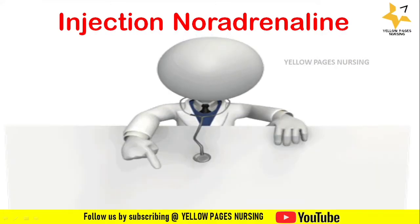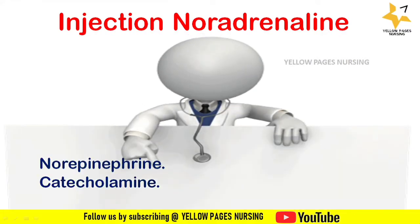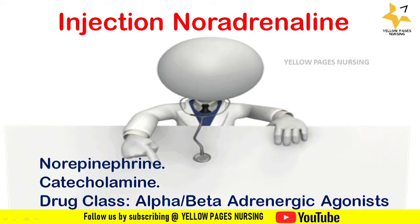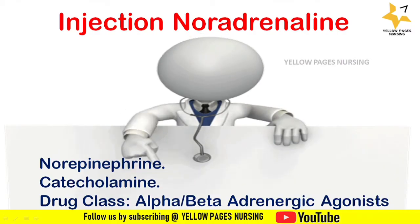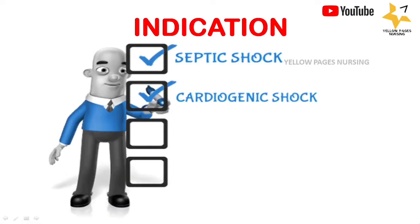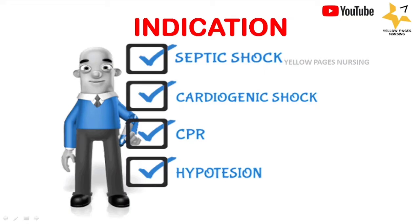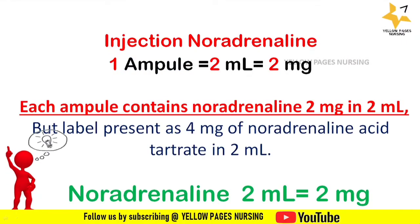Injection noradrenaline, otherwise called norepinephrine or catecholamines, comes under the drug class alpha or beta adrenergic agonists. Injection noradrenaline is indicated in cases of septic shock, cardiogenic shock, CPR, hypotension, etc. It comes in ampoule form with one ampoule containing 2 ml.